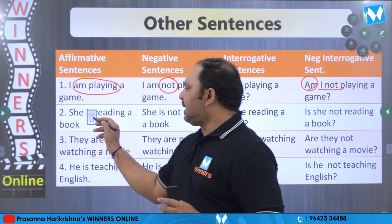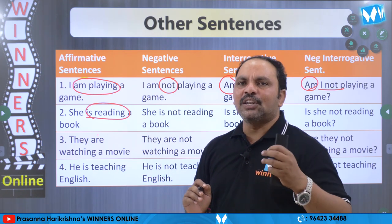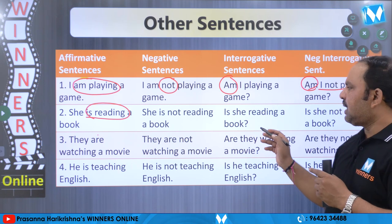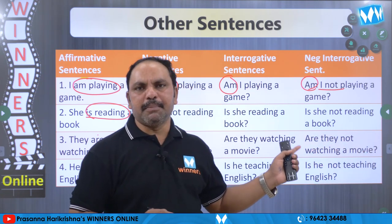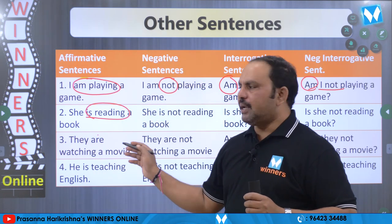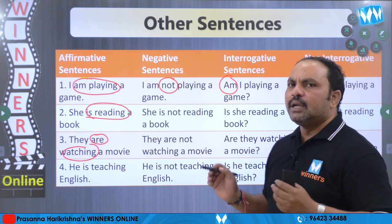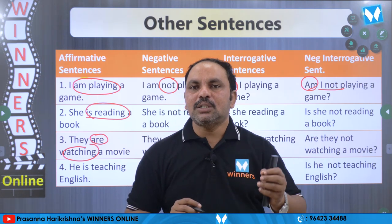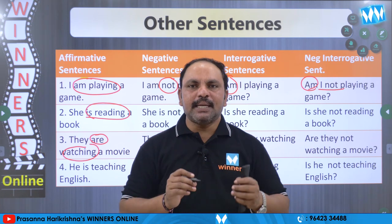Next man chuddam. She is reading a book. Dini negative ga marchalante is tharavata 'not' ni cheyyaali: She is not reading a book. Marii question enti: Is she reading a book? Negative interrogative: Is she not reading a book? And third: They are watching a movie. Negative: They are not watching a movie. Question: Are they watching a movie? Negative interrogative: Are they not watching a movie? This is how we write the other sentences for the present continuous tense.